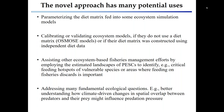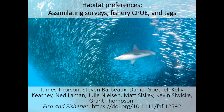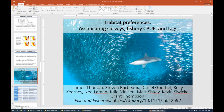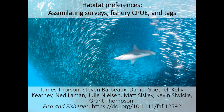No questions yet, so go ahead and continue. Shifting gears, I'll next talk about what I think is a similarly simplified way of thinking about movement. It spans both Lagrangian approaches — individual animal track reconstruction like archival or GPS tags — and can also be applied to Eulerian box models. It's a generic framework across that divide in movement ecology. Colleagues including Steve Barbeau, Dan Gothel, Kelly Carony, Ned Lehman, Kevin Swicki, Grant Thompson, Matt Siskey, and Julie Nielsen wanted to demonstrate the flexibility and power of this approach by applying it to a combination of survey, fishery CPUE, and tagging data for Pacific cod.